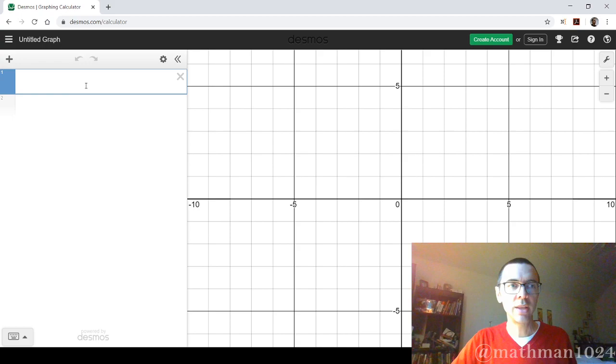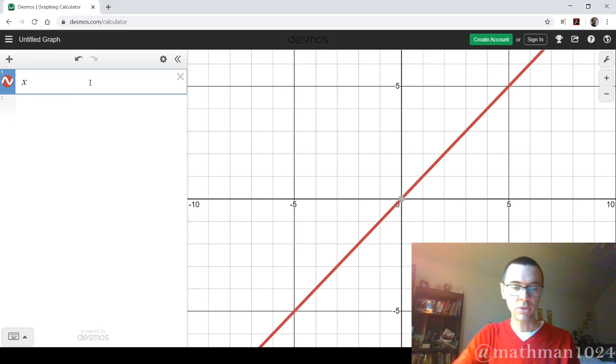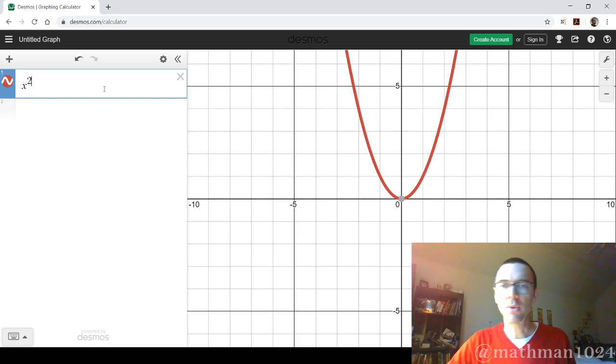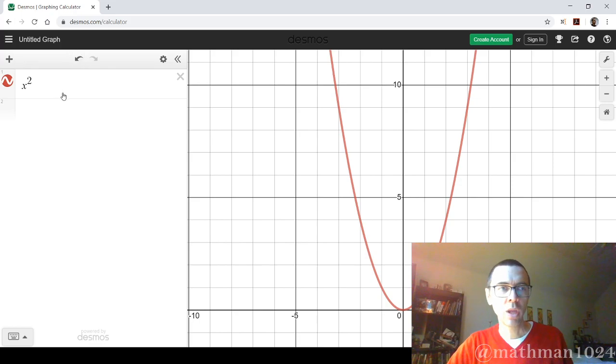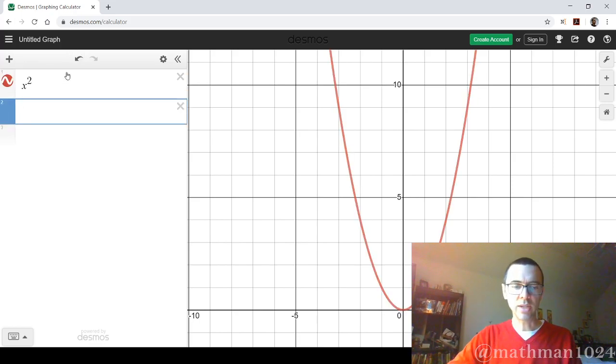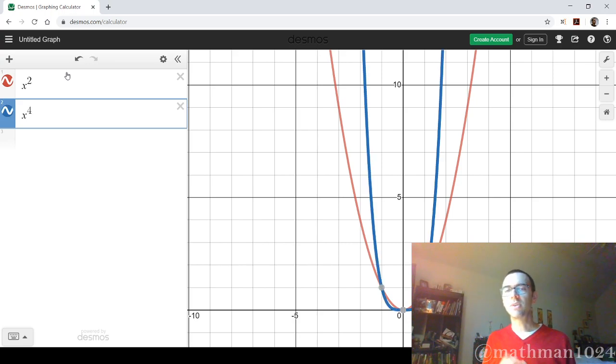So here, things that have an even power, so x squared, looks like a parabola, right? I don't think there's any surprise at that. But what you'll see is that when I graph things like x raised to the fourth power, it has a very similar shape.